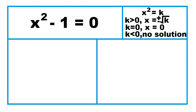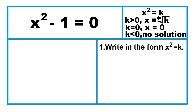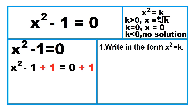Another example: x squared minus 1 equals 0. Solve for x. Write in the form x squared equals k by adding 1 to both sides of the equation: x squared equals 1. Now we have an equation of the form x squared equals k, where k is greater than 0, meaning there are two solutions.